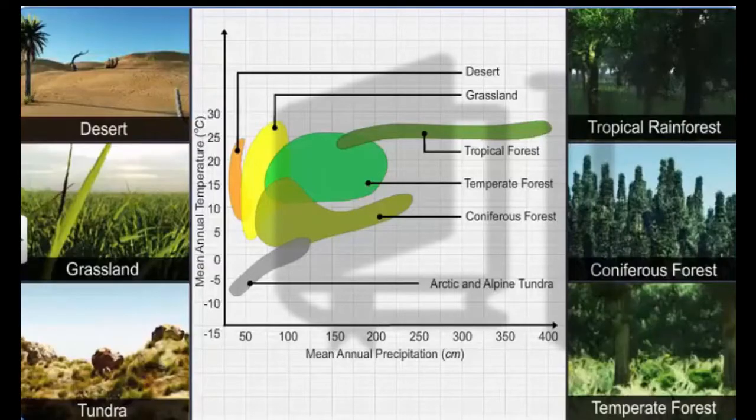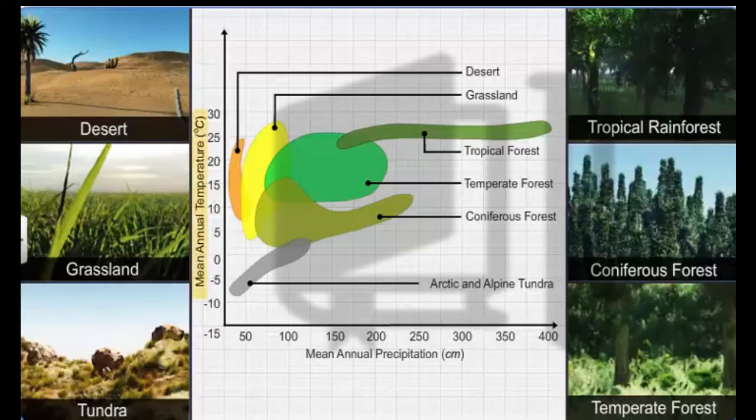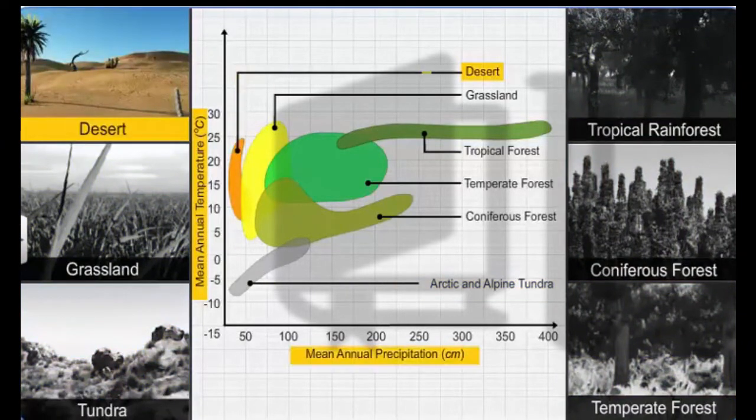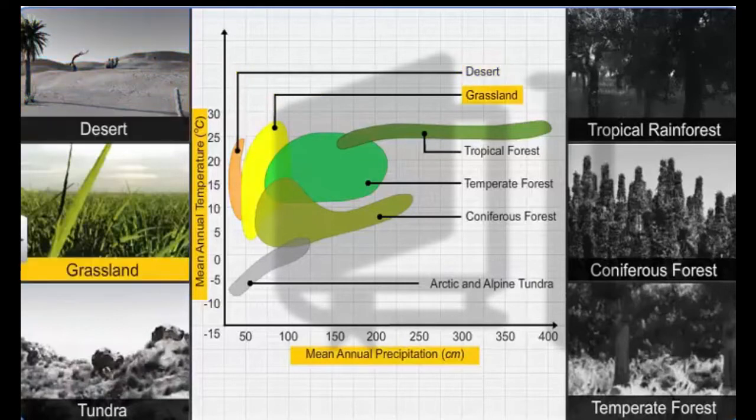If you carefully study biome distribution, you will notice that the mean annual temperature and precipitation is less in the tundra region. Compared to deserts, precipitation is better in grasslands, although temperatures may sometimes be a little higher.